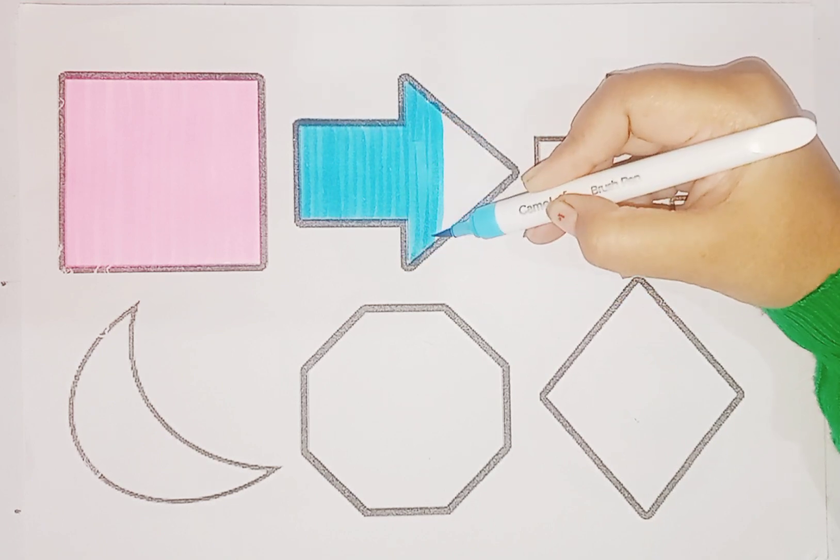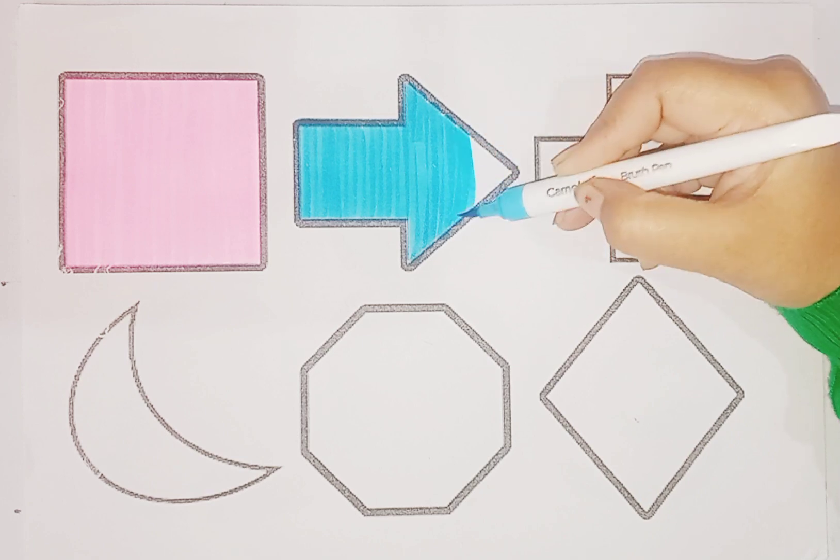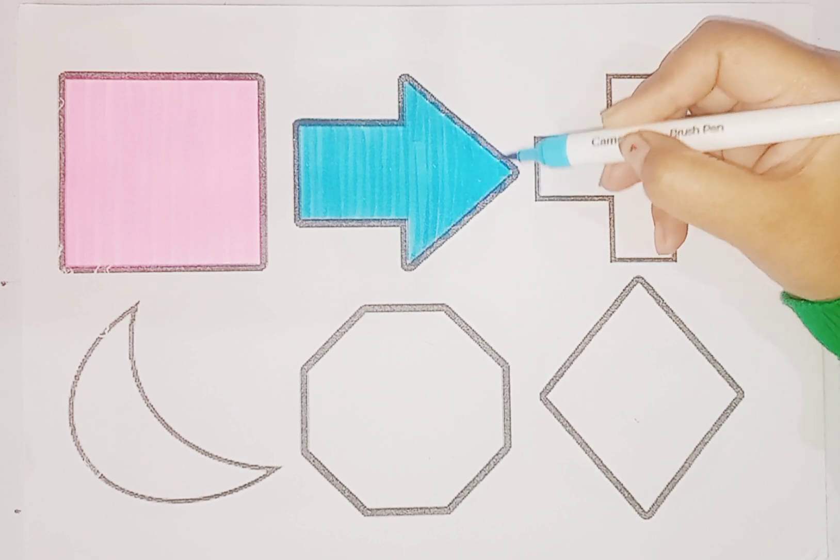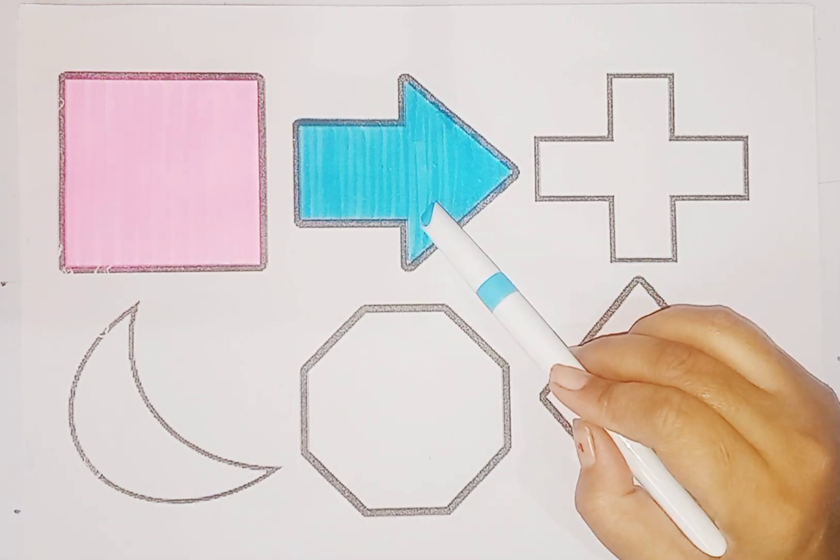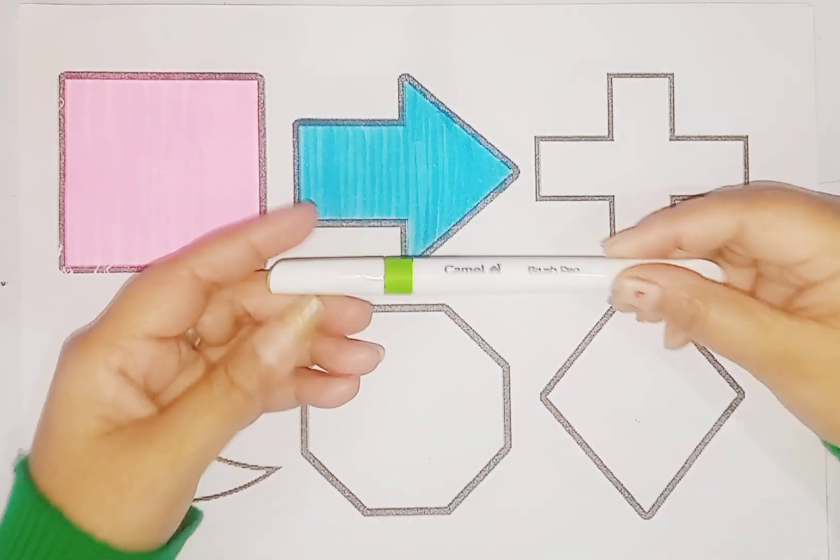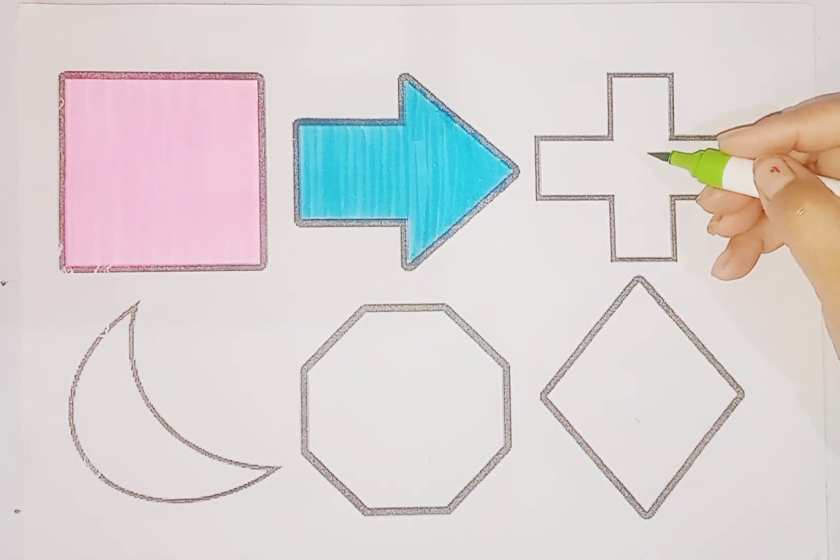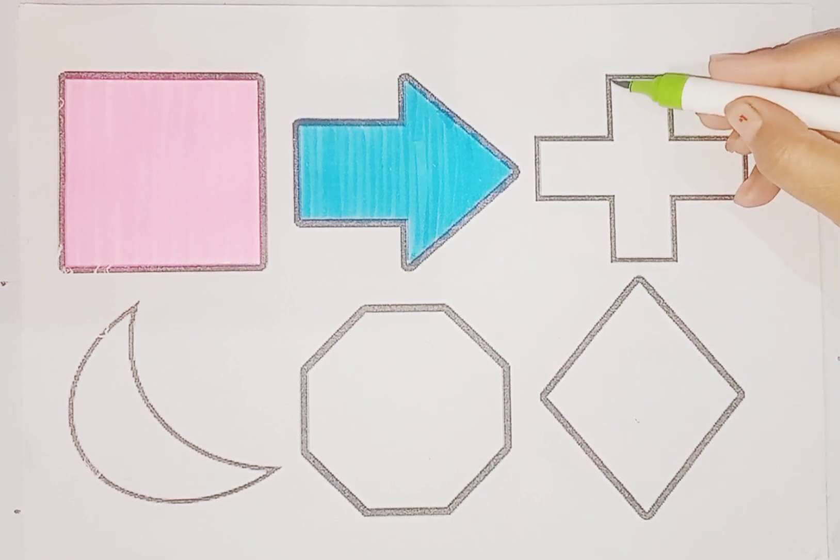Light green color. Arrow. Light green color, and the shape is cross.